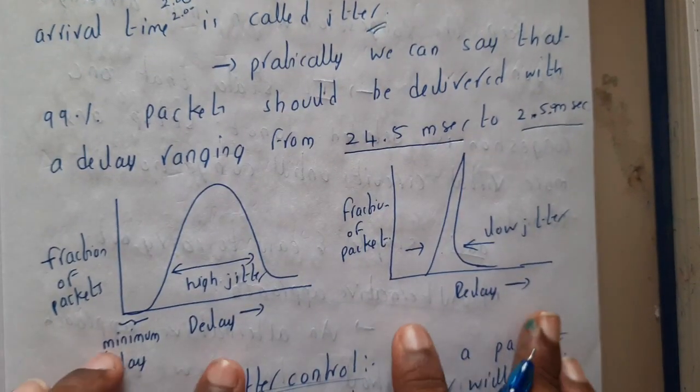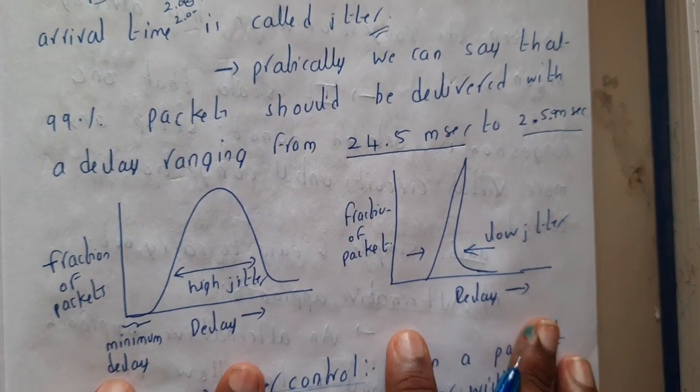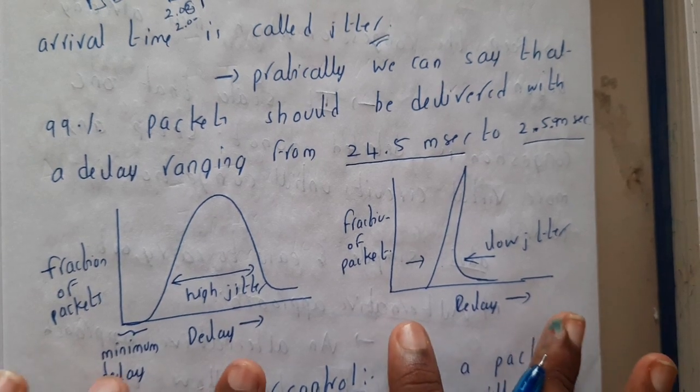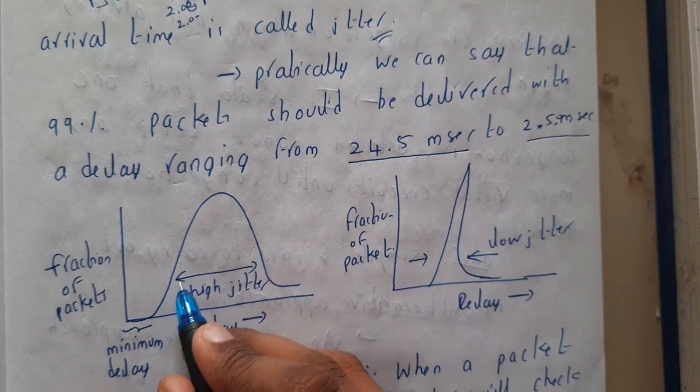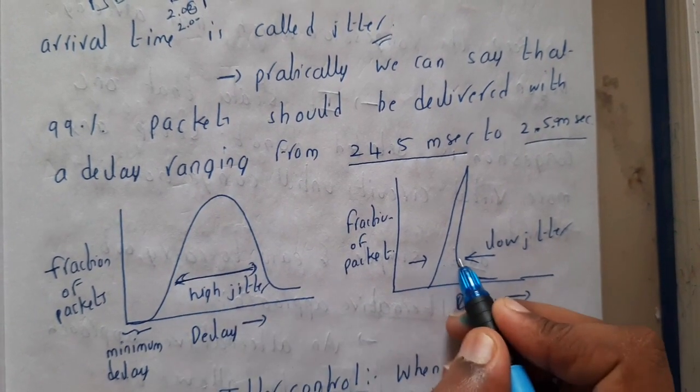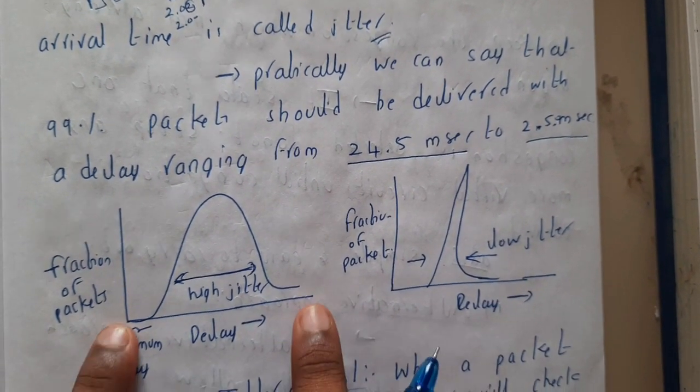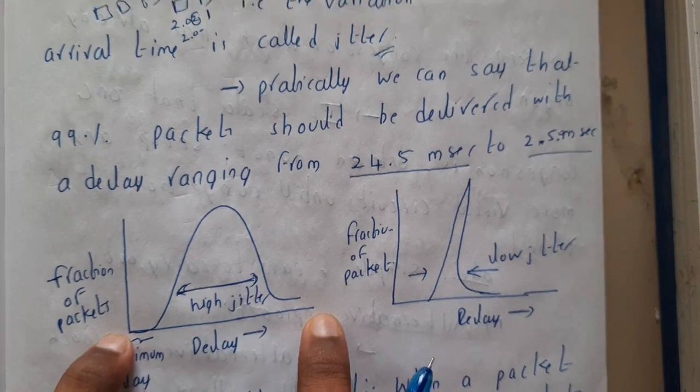So these are the two graphs for minimum and maximum jitter. I didn't understand anything in these graphs, so you can just go through them. So here the jitter is high and here the jitter is low.